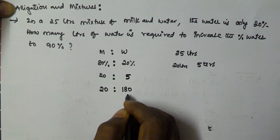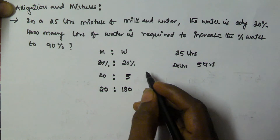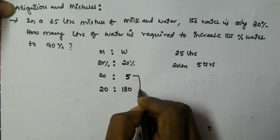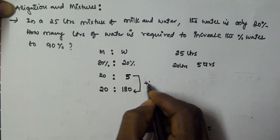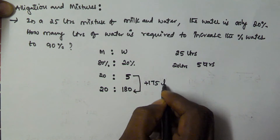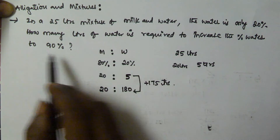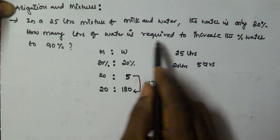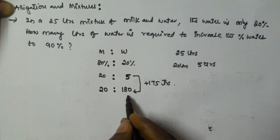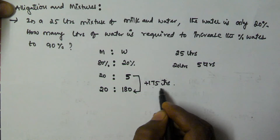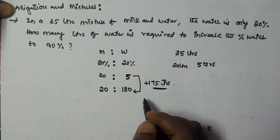If 10 percentage is 20 liters, then 90 percentage is going to be 180 liters. The increment in water is from 5 liters to 180 liters, so the increment is 175 liters of water. That means 175 liters of water is required to increase the percentage of water to 90 percentage.